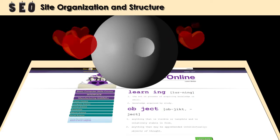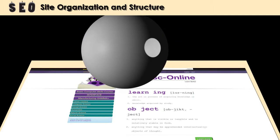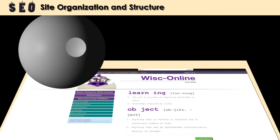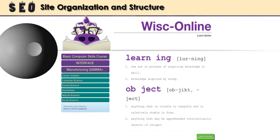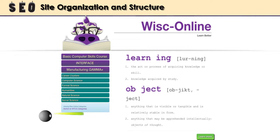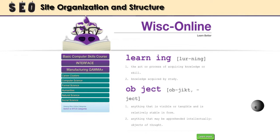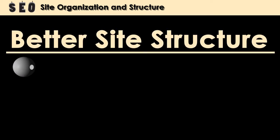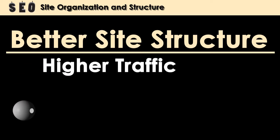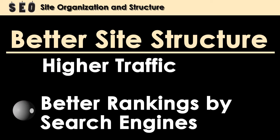Web crawlers love a well-organized site. When a site is planned properly, it's obvious what's important. This makes it easy for the web crawler to move efficiently through the site. This efficient movement translates to more organic search listings. The better your site structure, the better your chance of higher traffic and rankings by search engines.